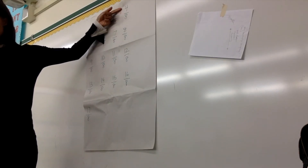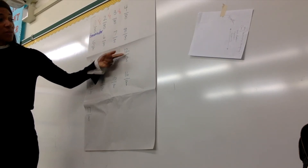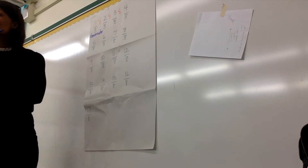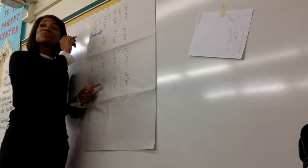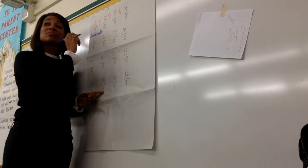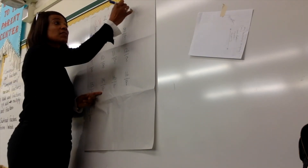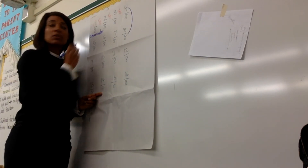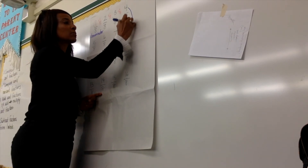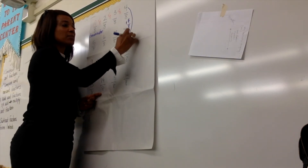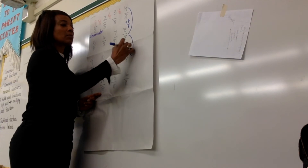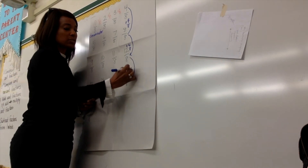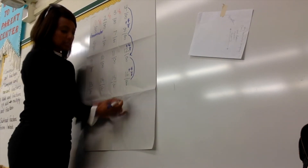So four in the numerator: 4/8, 8/8, 12/8, 16/8. So what are you noticing? If I start at 4/8 and go down to 8/8, how much am I adding? Four-eighths. And if I go from 8/8 to 12/8, how much am I adding? And from 12/8 to 16/8?